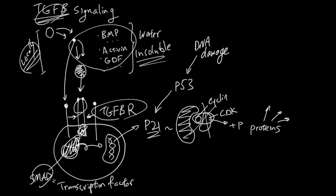And then the activated SMAD goes to the nucleus and turns on many genes, including P21. P21 binds to the cyclin-CDK complex and halts the cell cycle.